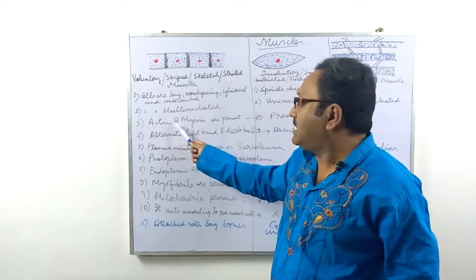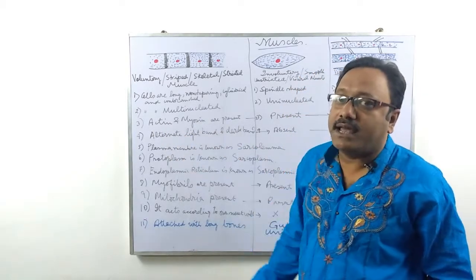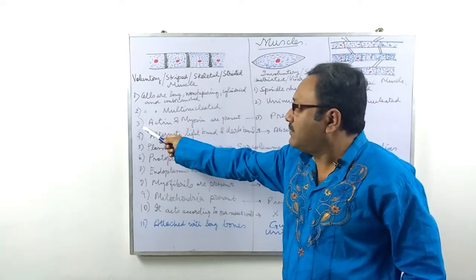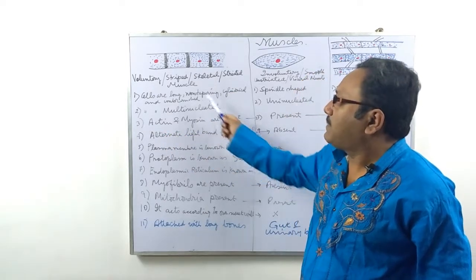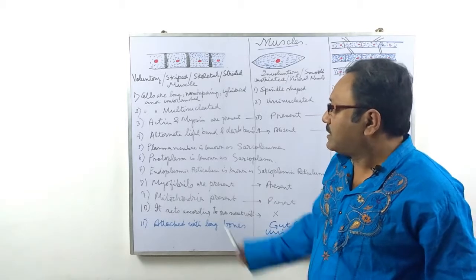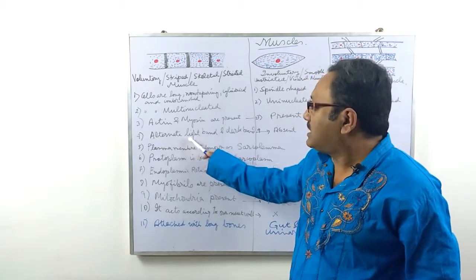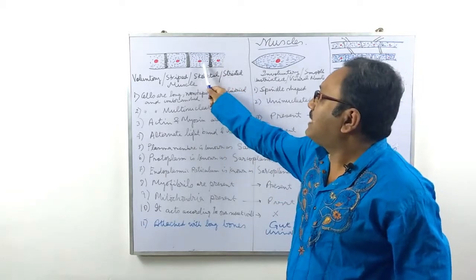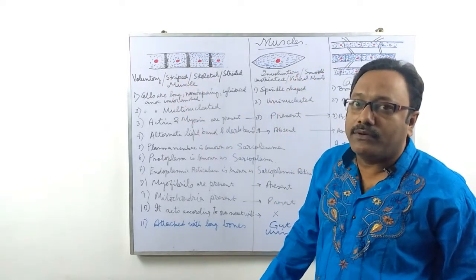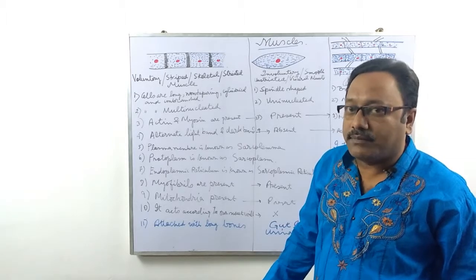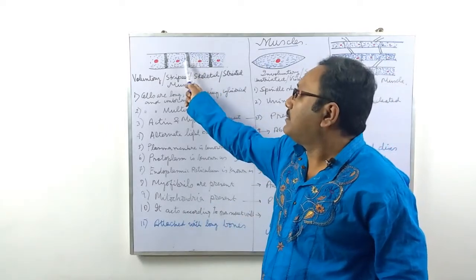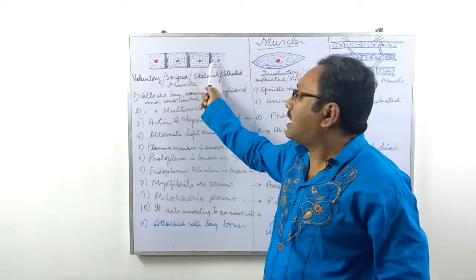Point number three: actin and myosin are present. Actin and myosin are the two types of proteins present in the muscle cell. Due to the overlapping of actin and myosin, these dark bands are produced. Point number four: alternate light bands and dark bands are present.